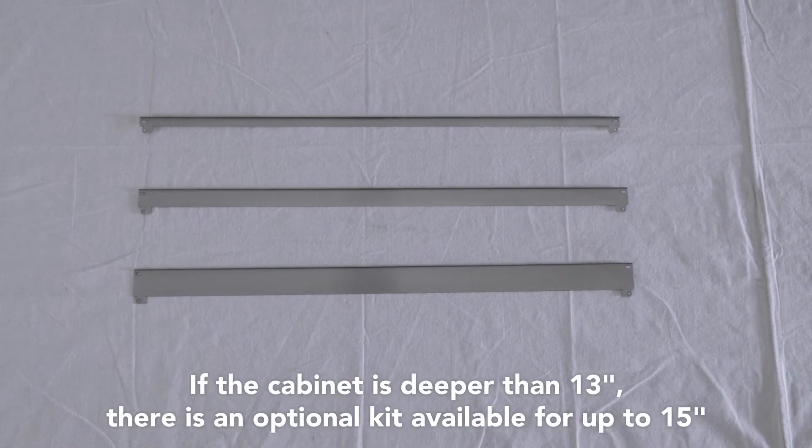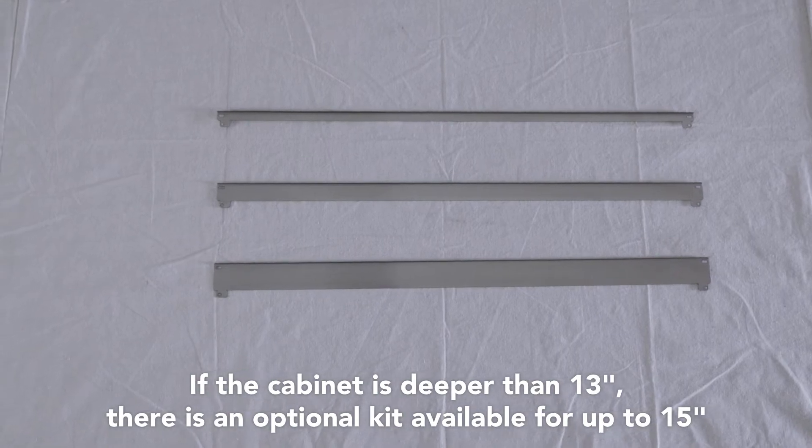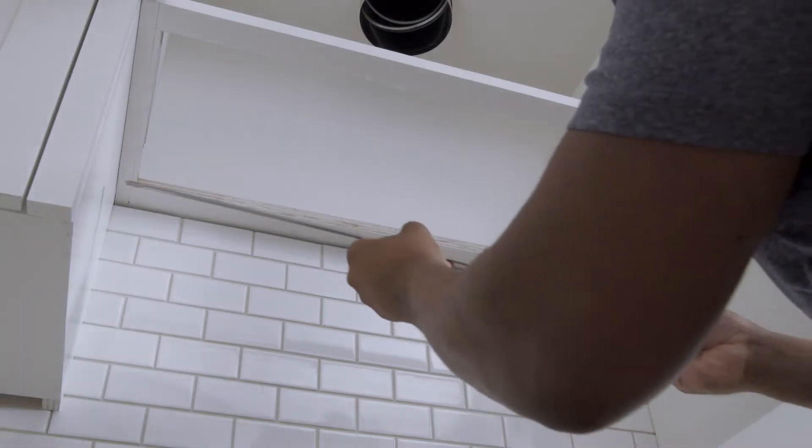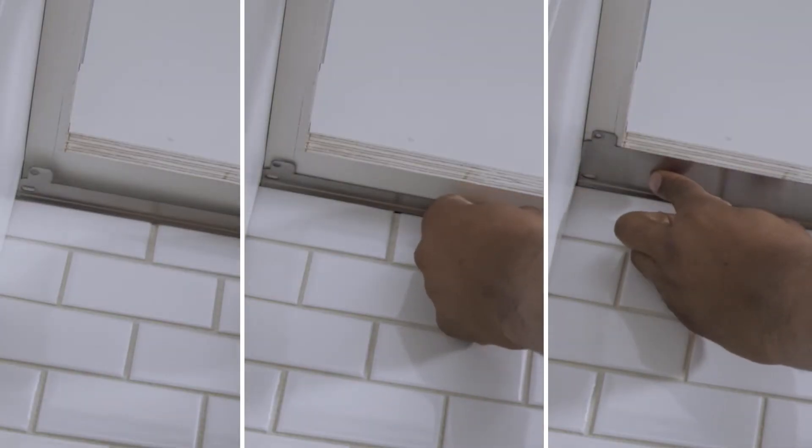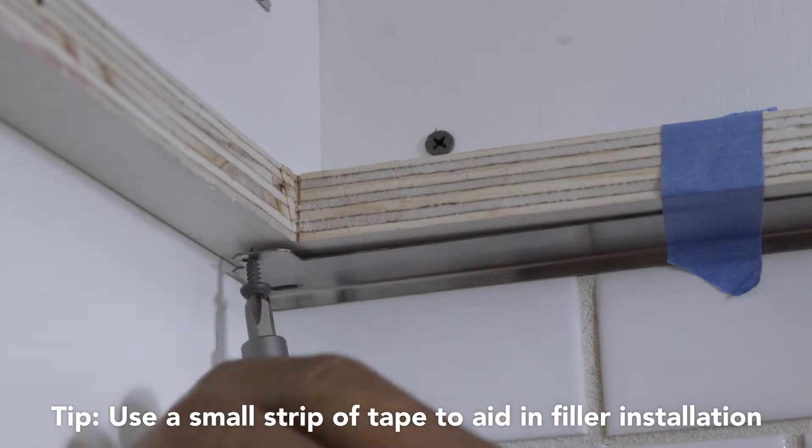There are three sizes of fillers included that are designed to fit cabinets up to 13 inches in depth. Pick the filler that best aligns with the back wall and the cutout to close the gap. Now, install using the wood screws provided.